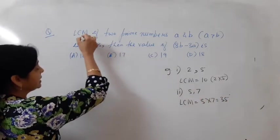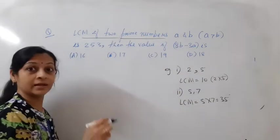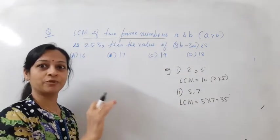So it is clear that if the LCM of two prime numbers is asked, that means it should be equal to the product of the numbers.